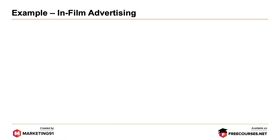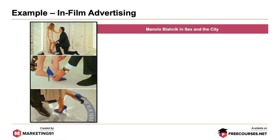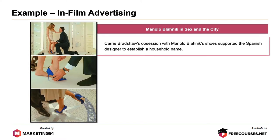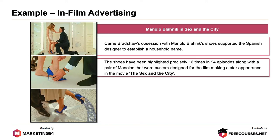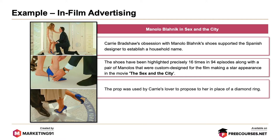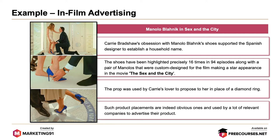Now let's look at some examples. Starting with the first one: in-film advertising — Manolo Blahnik in Sex and the City. Carrie Bradshaw's obsession with Manolo Blahnik's shoes supported a Spanish designer to establish a household name. The shoes have been highlighted precisely 16 times in 94 episodes, along with a pair of Manolos custom designed for the film making a star appearance in the movie Sex and the City. The prop was used by Carrie's lover to propose to her in place of a diamond ring.